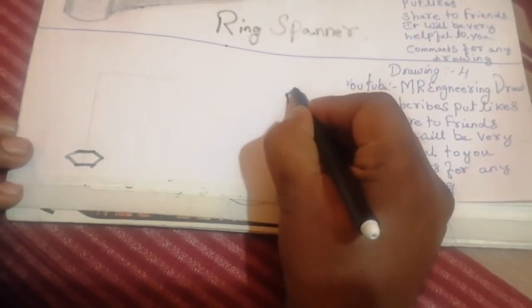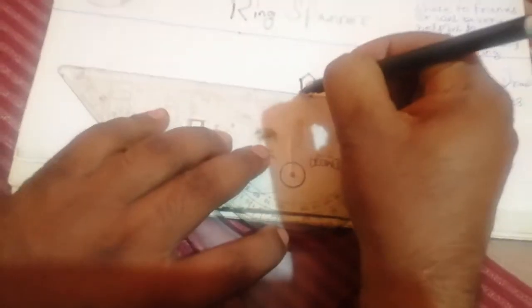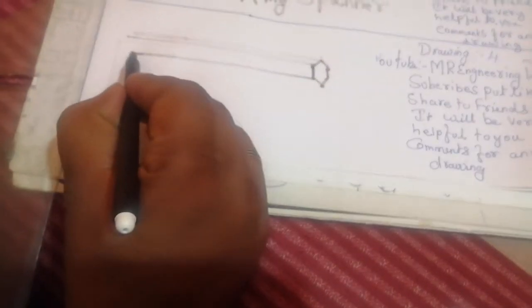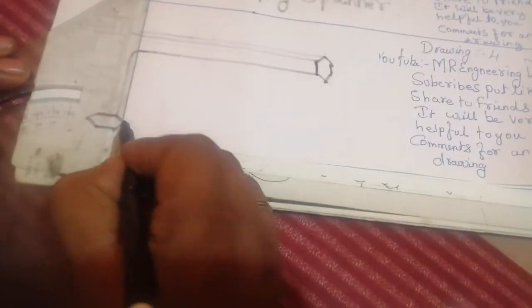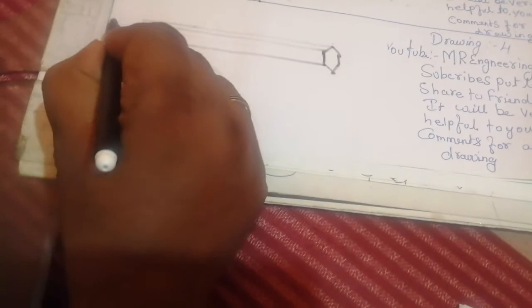One more hexagonal. Then take a scale, join this line and join this line at the edge of the hexagonal. Join this line, then take a little bit of curve and join this line, and join this line, join this line.